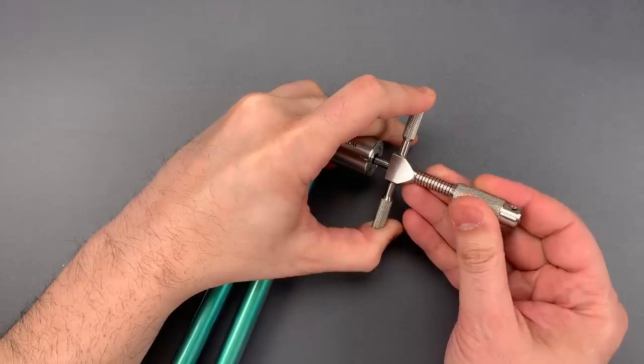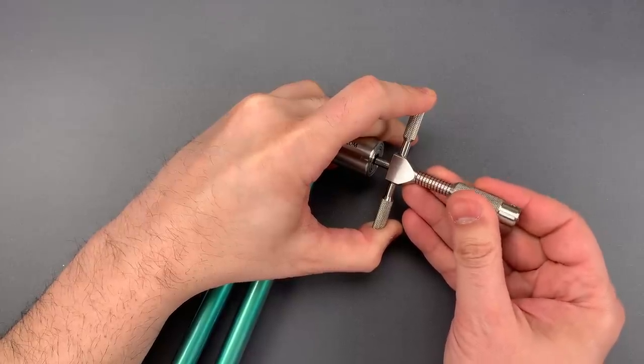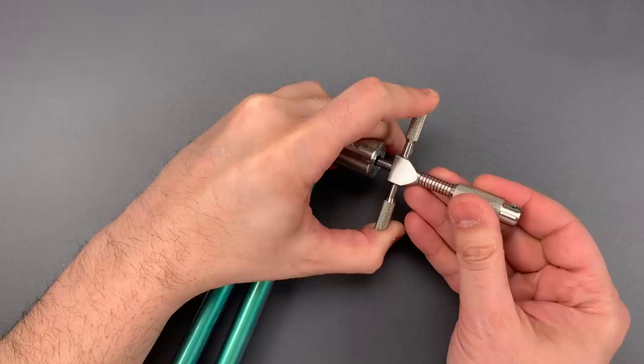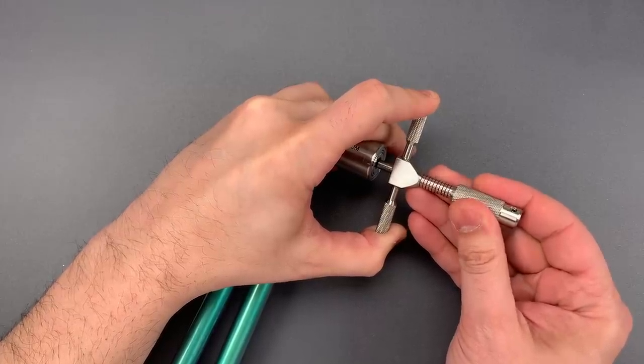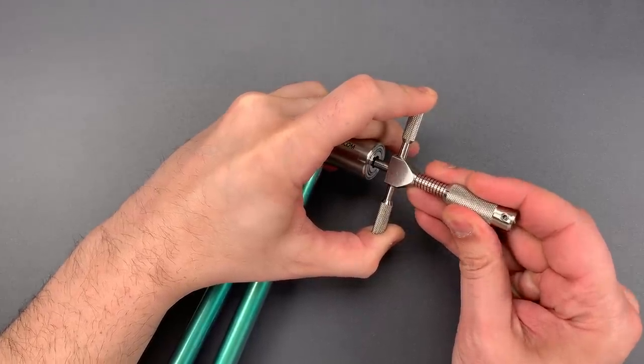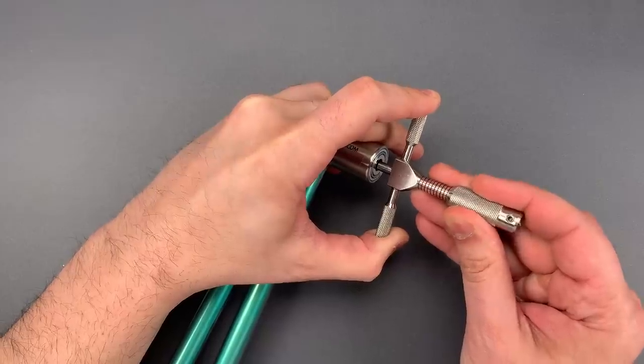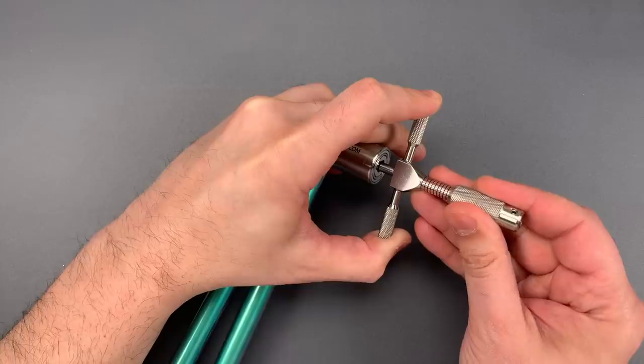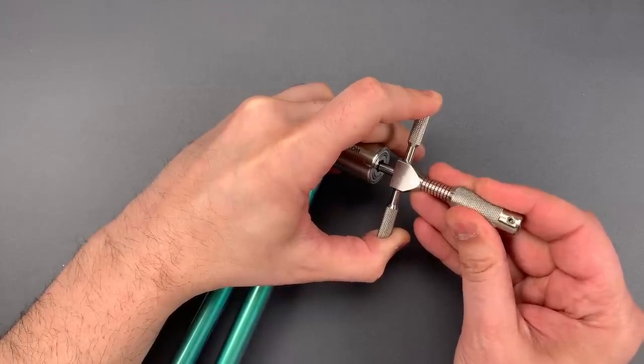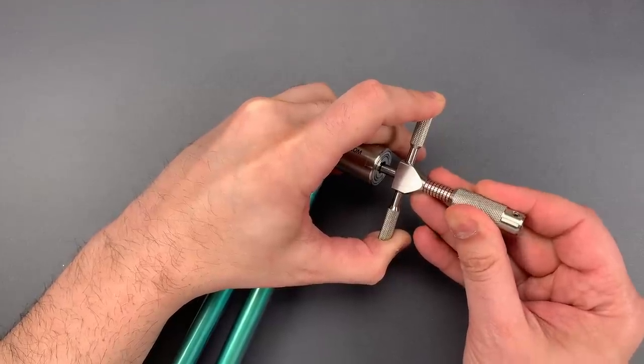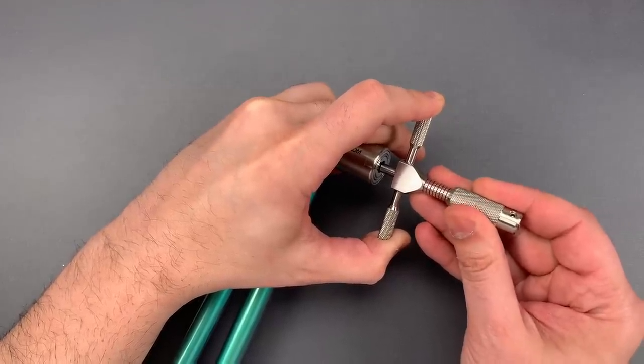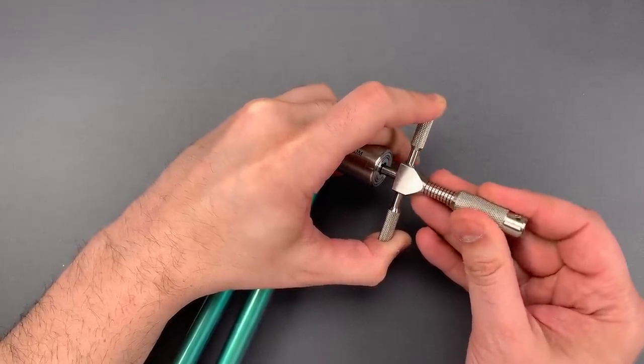Two feels loose. So does three. Four is binding. Nice click there. Five is binding. There we go. Click out of five. Six is loose. And so is seven.